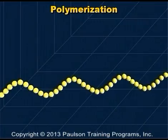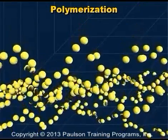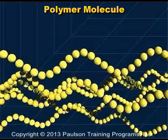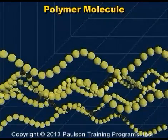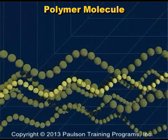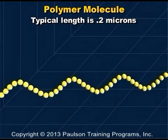The process of making long molecules out of short ones is called polymerization. Polymer molecules are large as molecules go, but still very tiny by our measurements. A typical polymer molecule length is only about 0.2 microns.